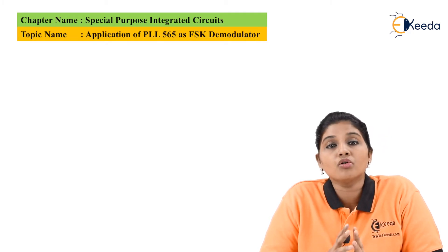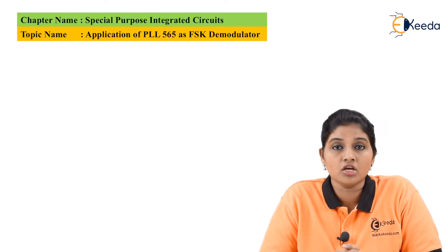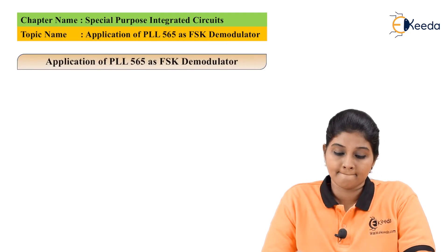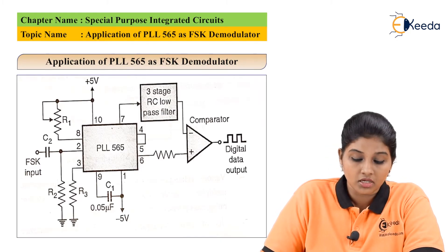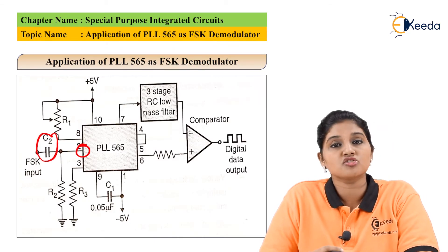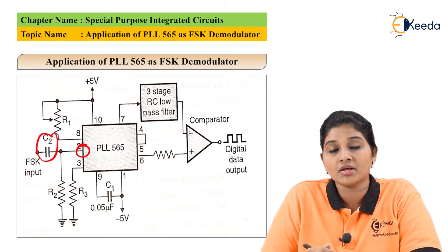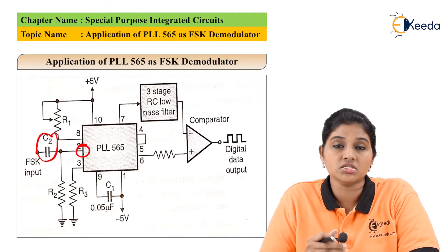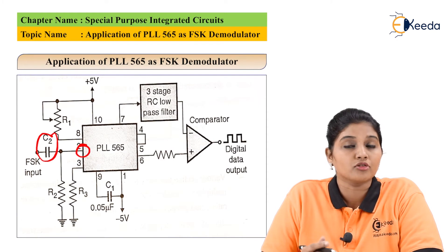Now let's see how FSK is demodulated by using PLL IC565. For that, let's first have a look at the circuit diagram or block diagram. From the block diagram we can see that the input is applied to pin number 2 by using a capacitor C2, meaning capacitive coupling is used. The basic function of the capacitor is to act as a filter, so the DC component present in the FSK carrier frequency is blocked by the capacitor.